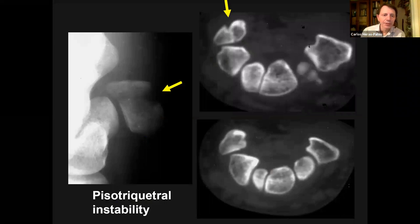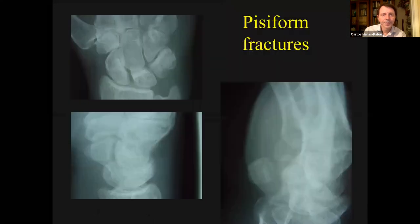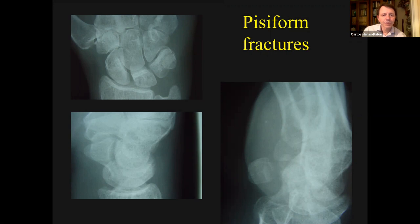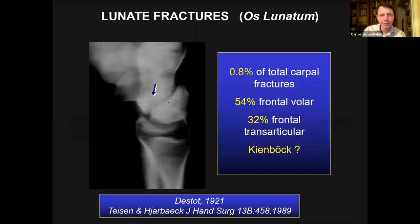Also described is pisotriquitral instability in some cases, and what I've done is excise the pisiform and stabilize the ligaments and soft tissues. Remember that these fractures are not easily seen on a PA or lateral view but are easily seen on a 20-degree supinated view of the wrist. So if somebody comes to you with pain on the volar aspect of the wrist, ask for a supinated view of 20 degrees as well as the standard PA and lateral as a minimum.